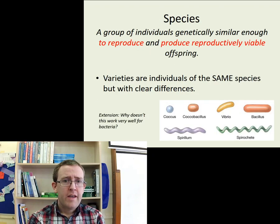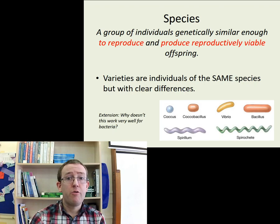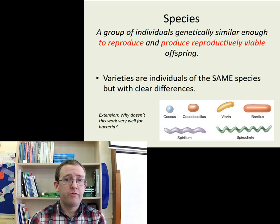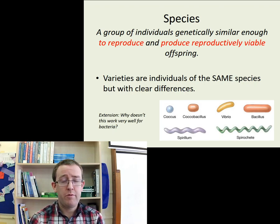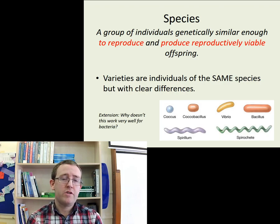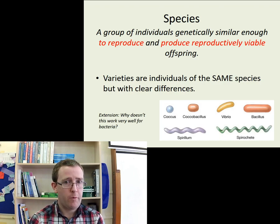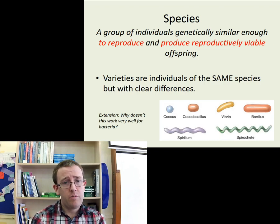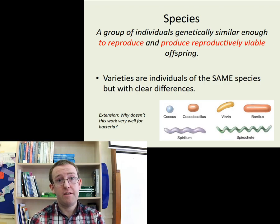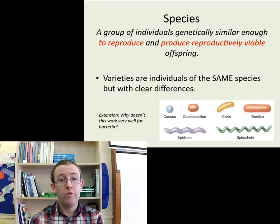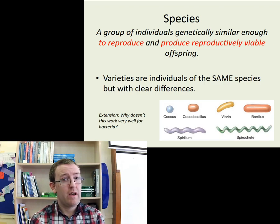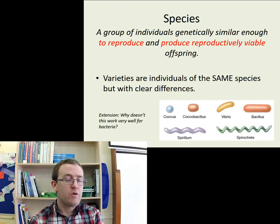So, our species concept from last lesson: a group of individuals is genetically similar enough to reproduce and produce viable offspring — meaning the two individuals can reproduce, and then the offspring can also reproduce as well. There are of course varieties within one species with a lot of genetic variation. If you wanted to look into why bacteria don't really fit this definition, that would be a useful piece of extension — please let me know what you find out.